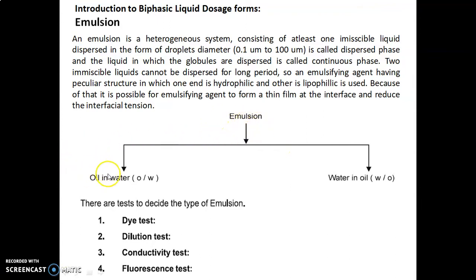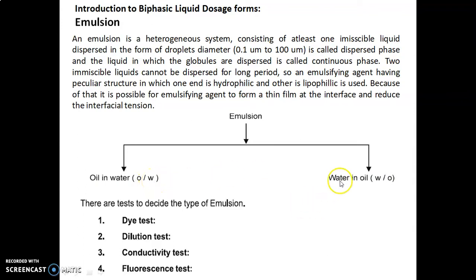The simple classification of emulsion is: oil in water (O/W type) and water in oil (W/O type). In the O/W type, oil is the internal phase while water acts as the external phase. In the W/O type, water is the internal phase while oil is the external phase. There are tests to decide the type of emulsion.